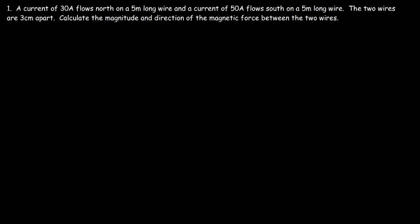A current of 30 amps flows north on a 5 meter long wire, and a current of 50 amps flows south on another wire that's five meters long. These two wires are three centimeters apart. Calculate the magnitude and direction of the magnetic force between the two wires. Let's start with a picture.